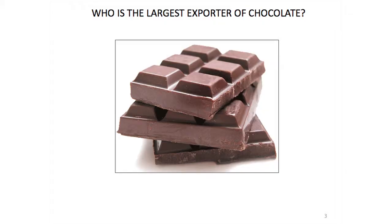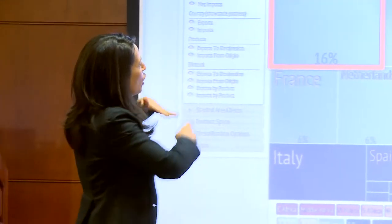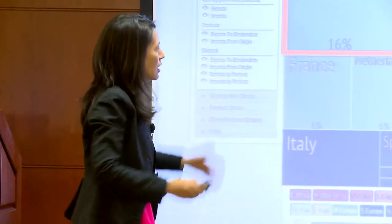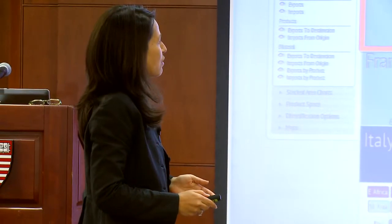Who do you think is the largest exporter of chocolate? Actually, Germany is the biggest exporter of chocolate. Belgium is second. This is a tree map that tells you of all the exports in 2011 — Germany exported 60% of the whole market.